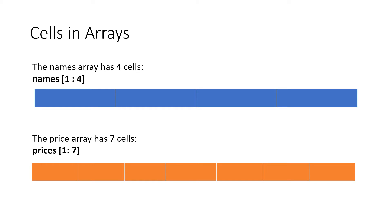In an array we talk about cells. So names[1:4] would be an array with four cells, or the prices array has seven cells: prices[1:7].